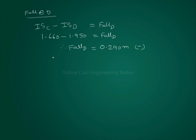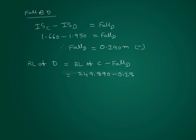The fall value is taken. Fall at D is equal to 0.290, which we confirm as 0.290 meters. Back sight at E was already found, equal to 0.960 meters.